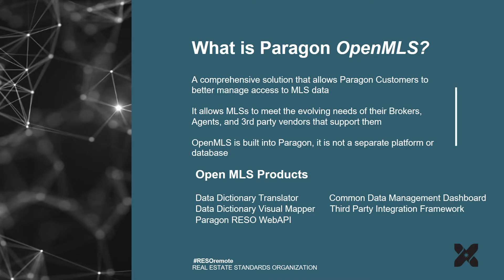What is Paragon OpenMLS? It's a comprehensive solution that allows Paragon customers to better manage access to their MLS data. It allows MLSs to meet the evolving needs of their brokers, agents, and third-party vendors that support them. OpenMLS is built directly into the Paragon application — it is not a separate platform where data is migrated from one solution to another.